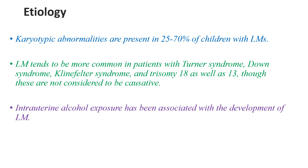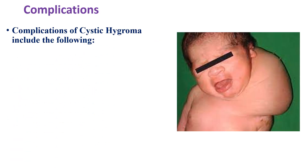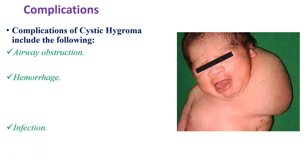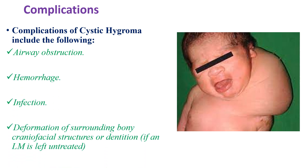Intrauterine alcohol exposure has also been associated with the development of lymphatic malformation. For many cystic hygromas, the causative agent is not found. Complications of cystic hygroma include airway obstruction or mass effect on the airway, hemorrhage, infection, and deformation of surrounding bony craniofacial structures or dentition if left untreated.